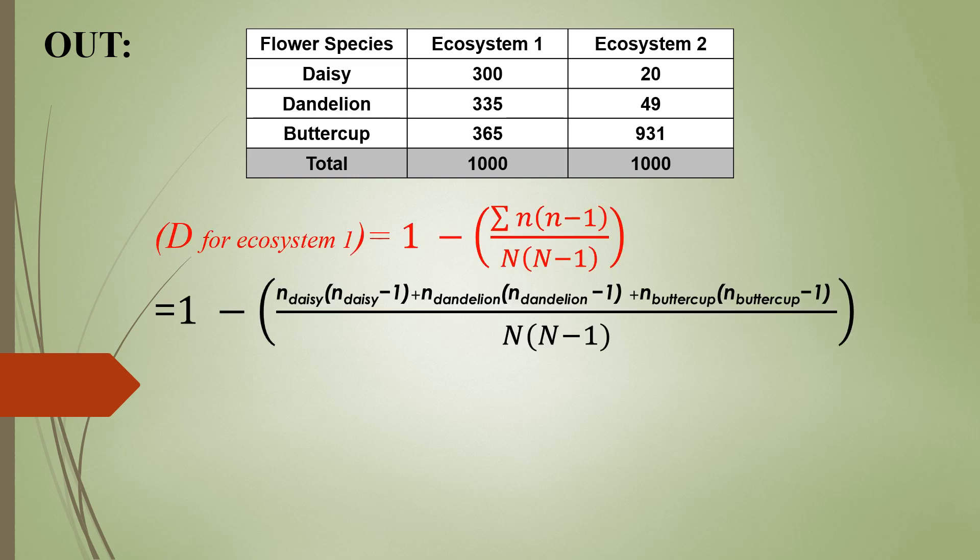To set up the equation, we need to replace all of the n's with the number of individuals from Ecosystem 1. So we had 300 daisies, 335 dandelions, and 365 buttercups. You are going to be replacing all the little n's with these numbers. You have a thousand individuals in total, so that's what you're going to be putting in place of the big N.